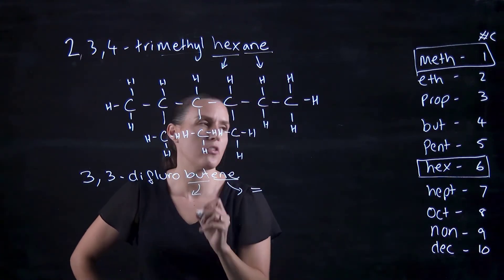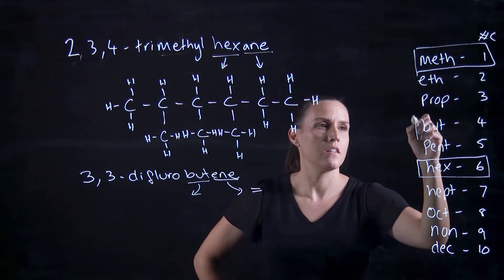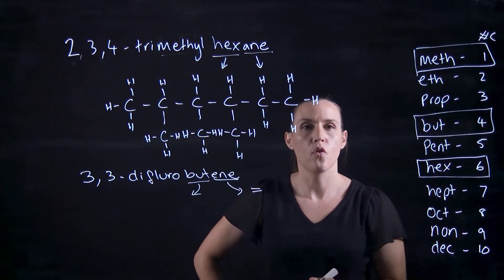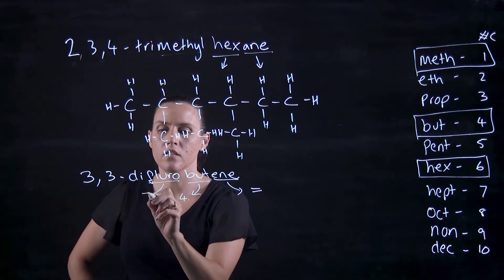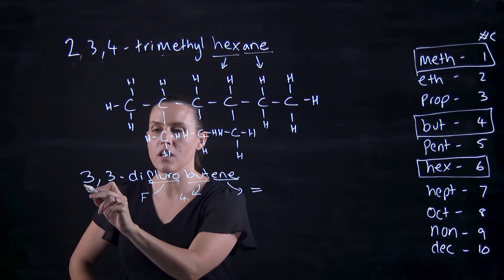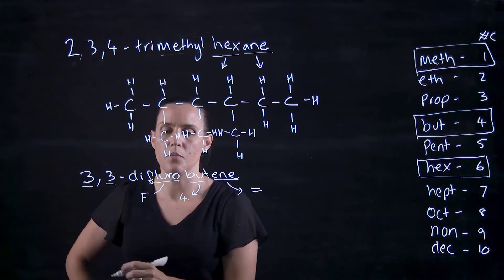So now you can see we've got an ene, so that's a double bond, and ane was a single bond. Bute, what's our number of carbons? Four, four carbon, and we've got the fluoro, and we've got one on carbon three and another one on carbon three.